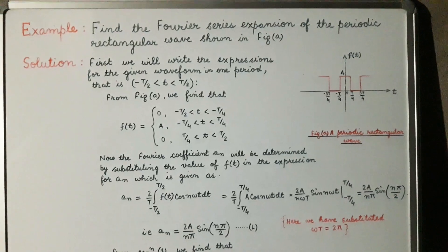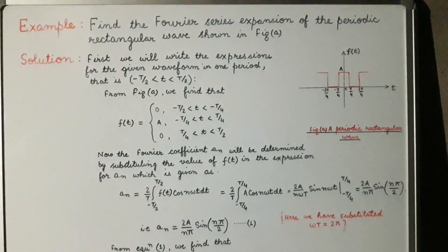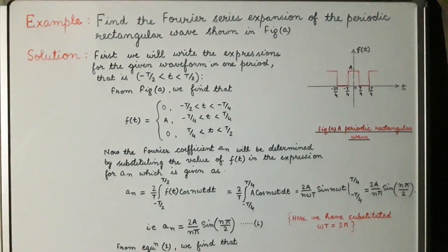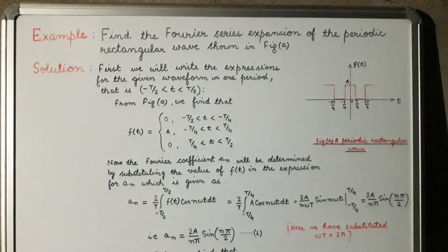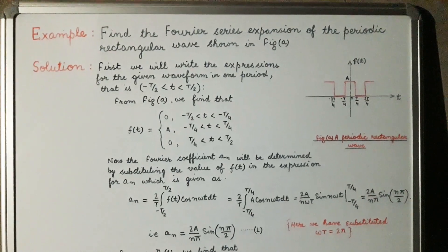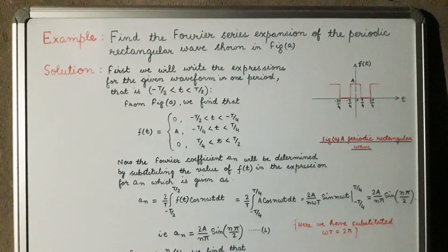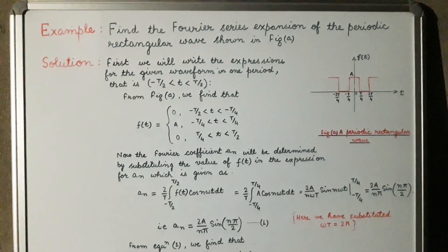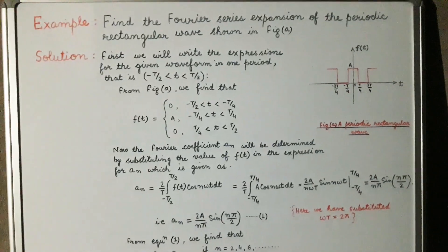Now let us discuss the example shown here. We have to find the Fourier series expansion of a periodic rectangular wave shown in figure a. The first step is to write the expression for the given waveform in one period, that is from the interval −T/2 to +T/2.